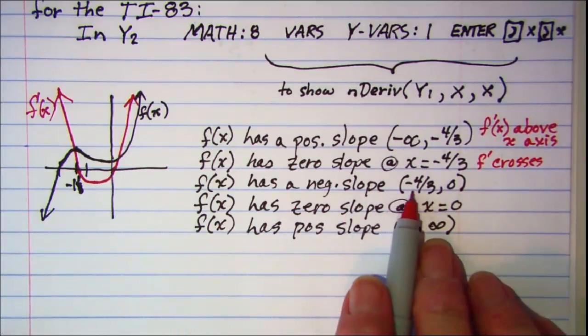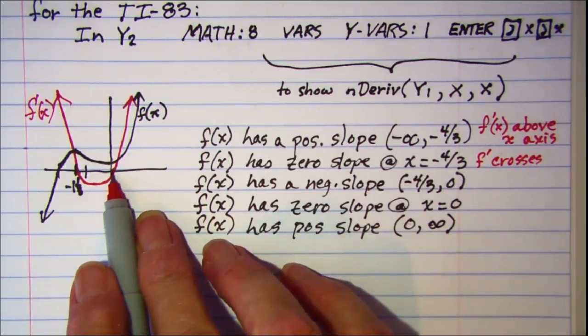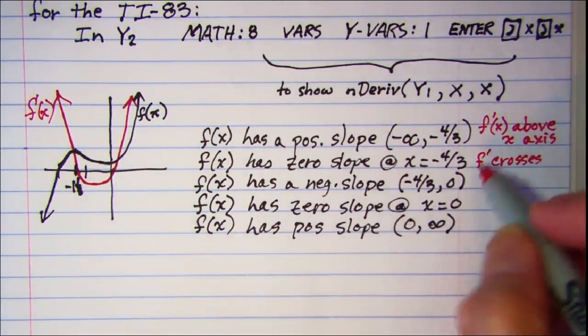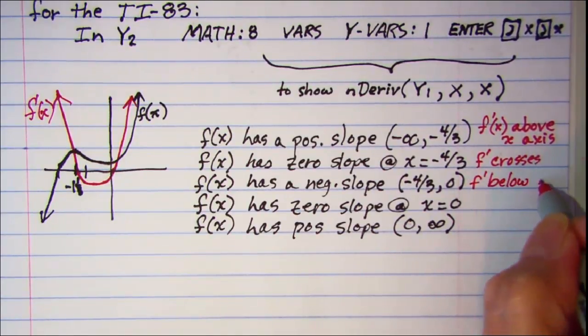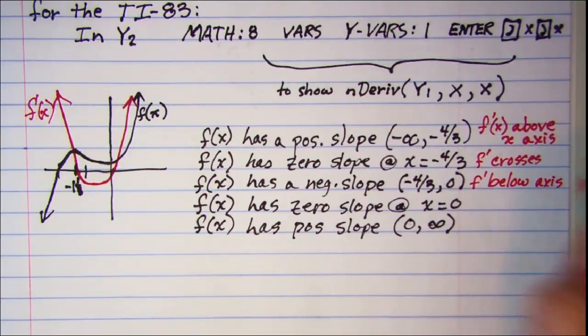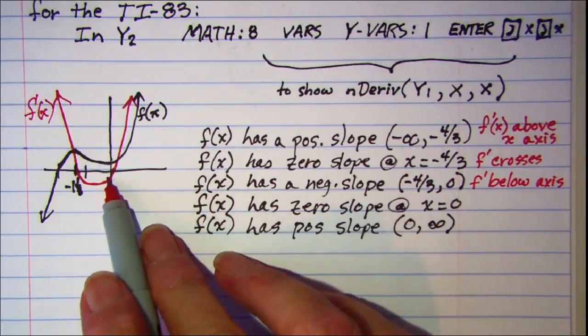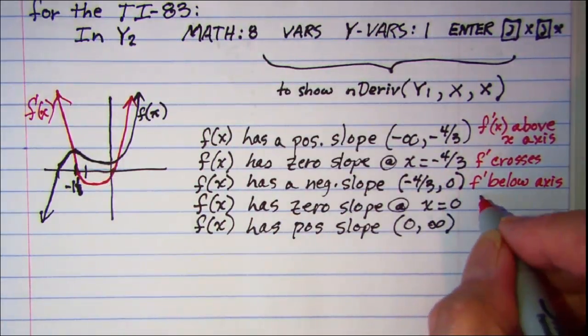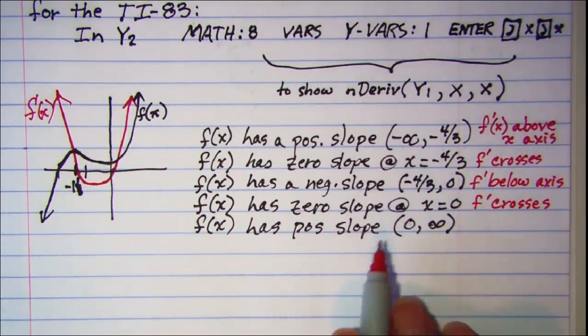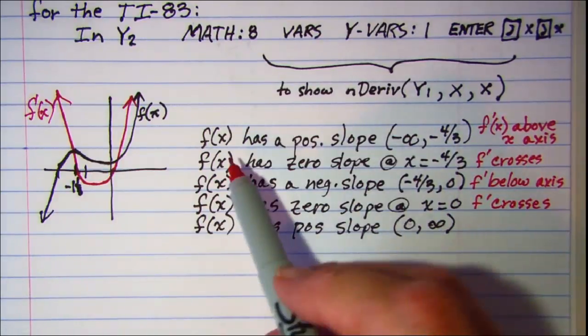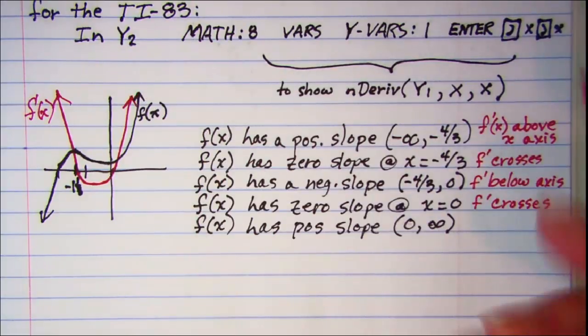On the interval from negative 4 thirds to zero, my derivative graph is below the x axis. Then at x equals zero, my derivative graph crosses the x axis. Then on the interval from zero to positive infinity, my graph of the derivative is above the x axis.